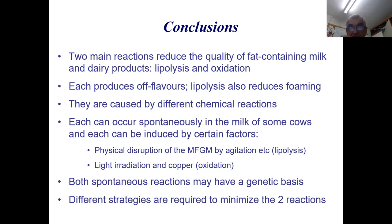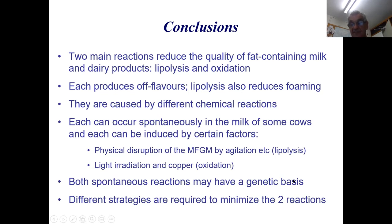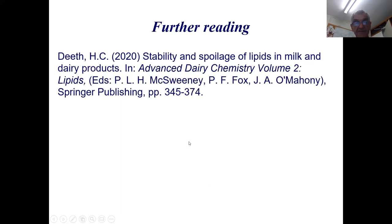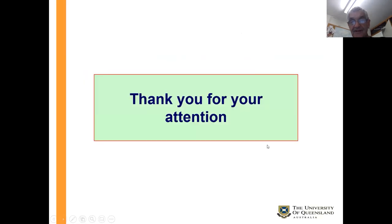In summary, two main reactions reduce the quality of fat-containing products: lipolysis and oxidation. Each produces off-flavors, and lipolysis also reduces foaming. They are caused by different chemical reactions. Both can occur spontaneously in milk from some cows on the farm, and both can be induced — by physical disruption of the membrane for lipolysis, and by light, copper, or radiation for oxidation. Both spontaneous reactions may have a genetic basis. Different strategies are required to minimize each reaction.